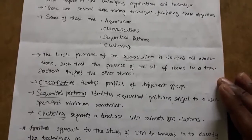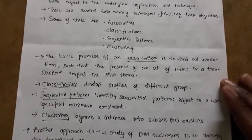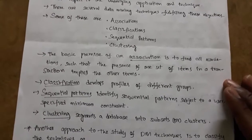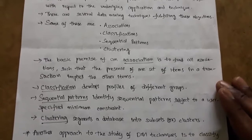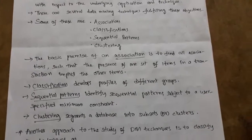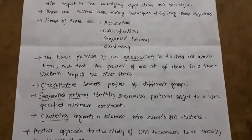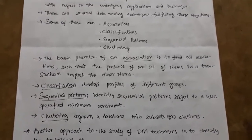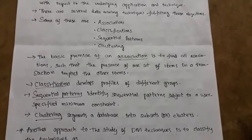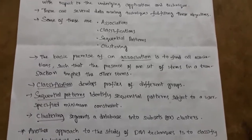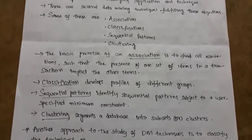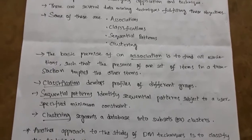Then clustering — it is related to association and classification. Clustering segments a database into subgroups or clusters. Suppose there are a thousand records; from a thousand it is difficult to identify our objectives. Instead, consider 100 records as one group — from those 100 you can easily identify your requirement. From each subgroup or cluster you should identify your requirements — clustering means grouping into subsets.